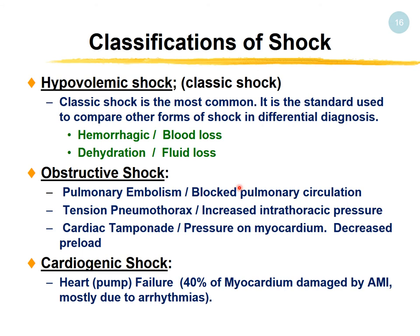Classification of shock — what initial problem leads to irreversible shock syndrome? The most commonly evaluated and researched shock type is hypovolemic shock — the classic shock, used as a standard to compare other forms for differential diagnosis. In hypovolemic shock, we are losing blood or fluid: hemorrhagic shock from blood loss, or dehydration from losing fluid, meaning we cannot maintain normal circulation.